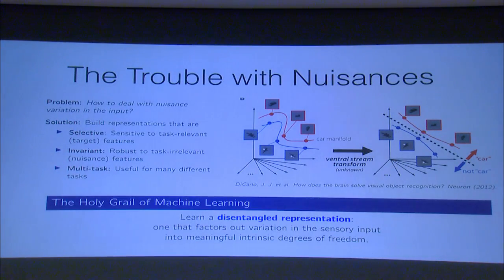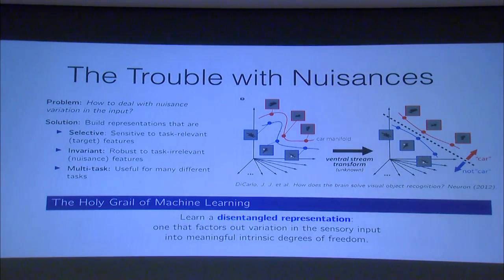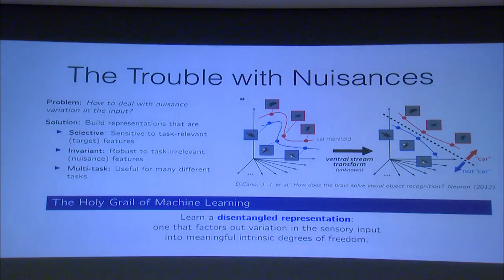The trouble with nuisances is that they're extremely high-dimensional — there are a lot of them in the scene before you, and they drastically affect the way that the image looks to your eyes. In order to solve this problem, we need some way of extracting the targets we care about. If we care about classification — telling the difference between cars and planes — we need a way to distinguish between those categories while being invariant to all those other nuisance variables, such as changes in lighting, pose, style, and so on. It's this dance between trying to get the target right while being invariant to all of these nuisance features that makes perceptual tasks very difficult. We'd love to invent some sort of algorithm that is selective to features we care about and invariant to the ones we don't.